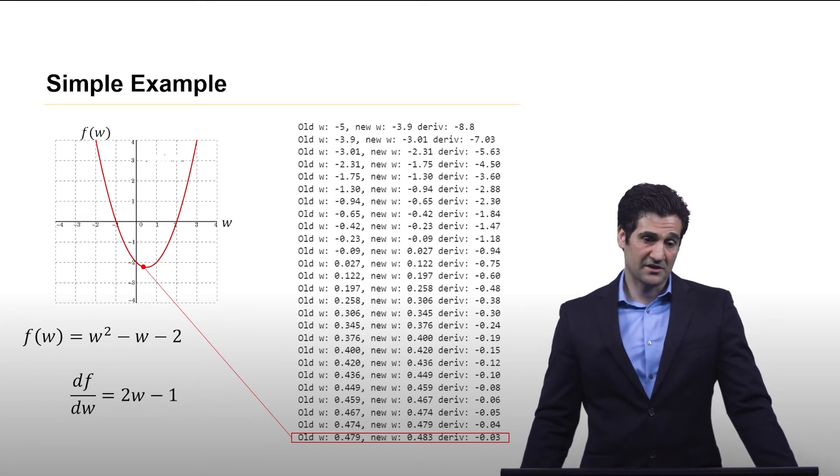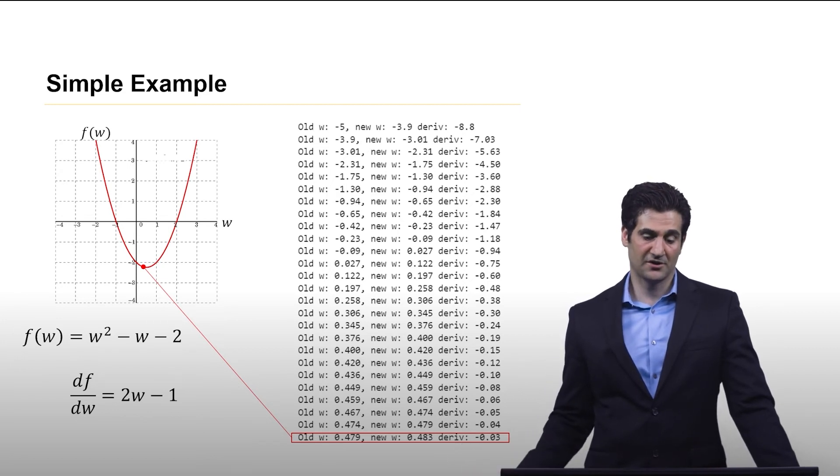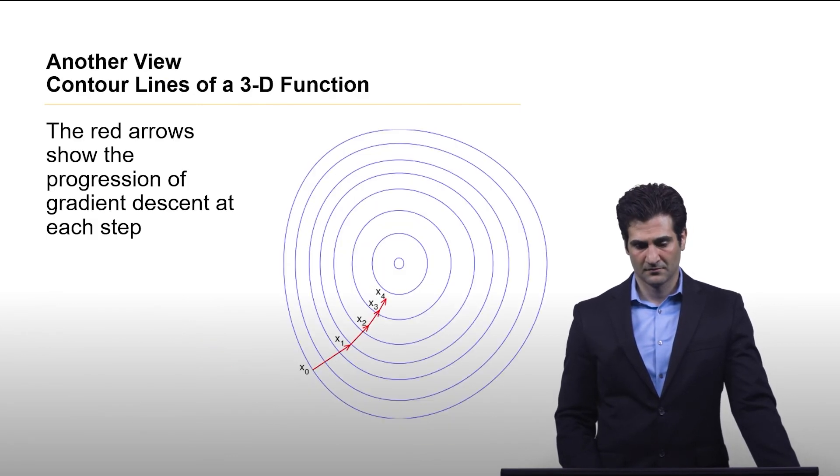Now if we had made the step size maybe smaller, or if we set a convergence criteria to be smaller, it would have got it right to 0.